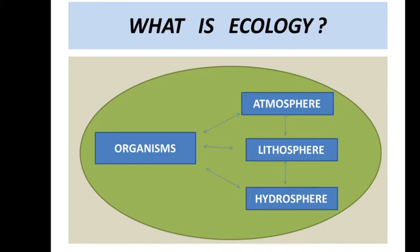Now let us understand the meaning of Ecology through this diagram. An organism is not only related to the atmosphere, but also to the lithosphere and hydrosphere — collectively forming the biosphere. There are different gases in the atmosphere in different concentrations. The lithosphere is the layer of soil, and the hydrosphere is related to water.